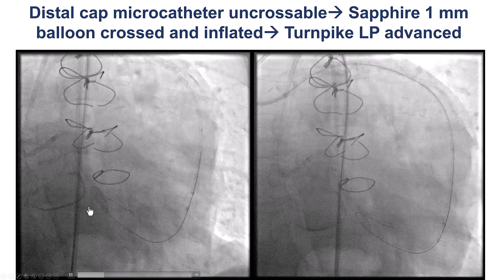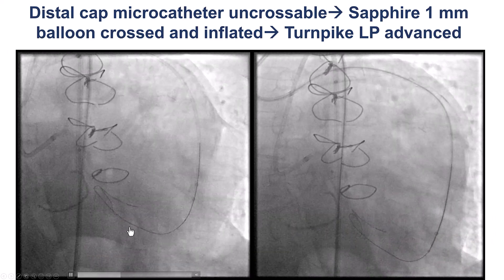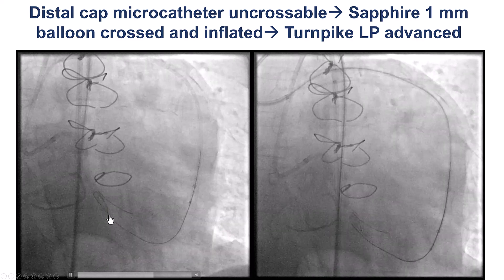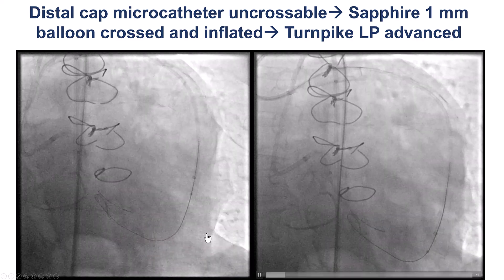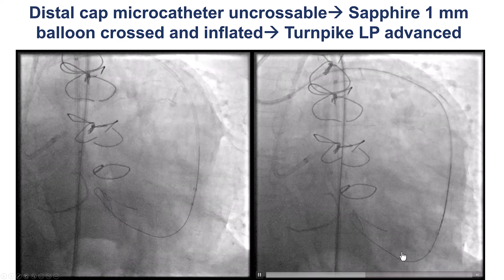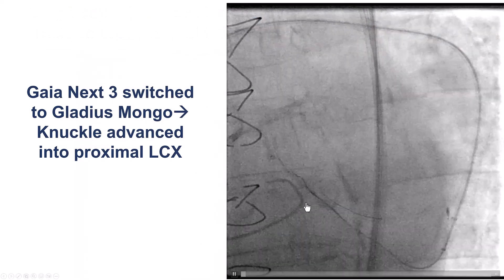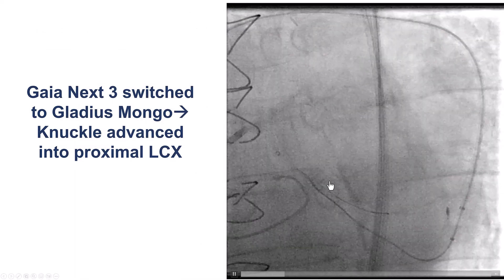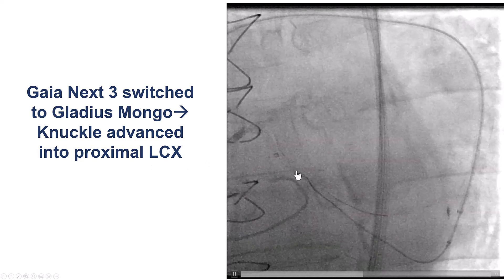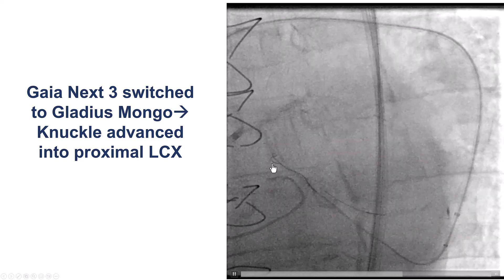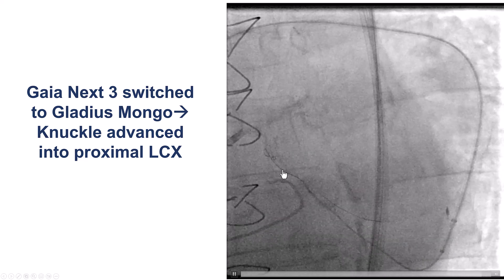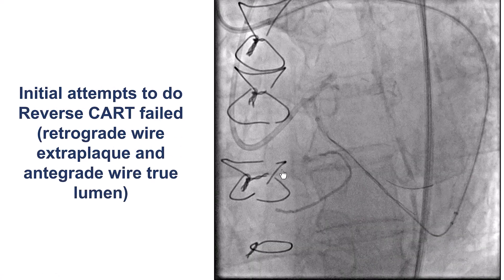A similar problem occurred with antegrade crossing. The distal cap was ballooned and crossable. We eventually used a Sapphire 1.0 that facilitated advancement, and were able to get the Turnpike LP a little further up into the vessel. We then knuckled a Gladius Mongo along the course of the vessel — the circumflex can be very tortuous, so using a knuckle is much safer than advancing non-knuckled guide wires.